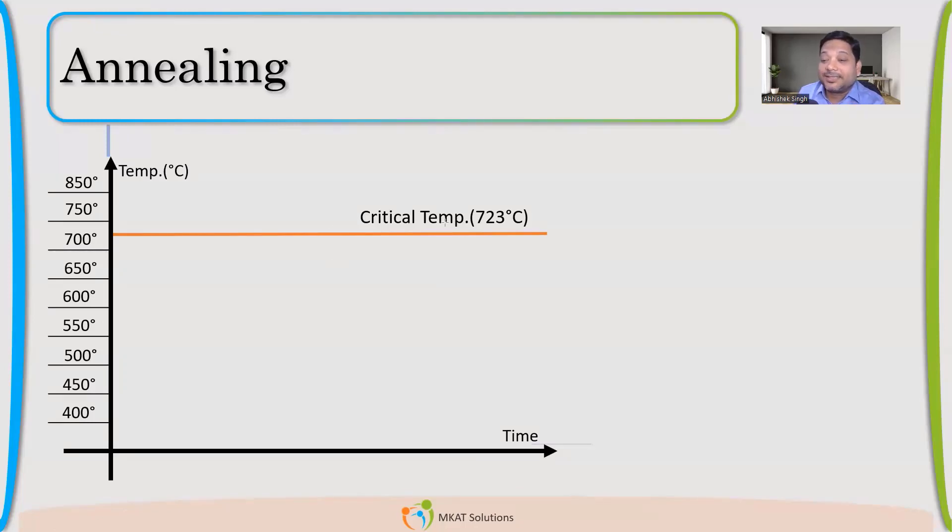So this is actually lower critical temperature. And for a typical carbon steel, it will come as 723°C. Even if you see the iron carbon diagram, this line is very constant. Even if you keep on increasing the percentage of carbon, you'll get that critical temperature 723°C.